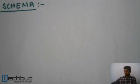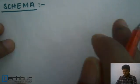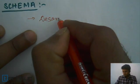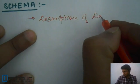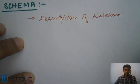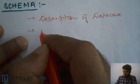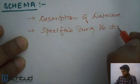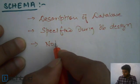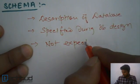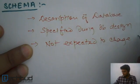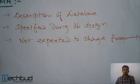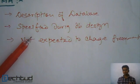Let's start with schema. Schema is the description of the database itself — a description of the database. This is specified during database design and is not expected to change frequently. Schema is like when you want to design a database.